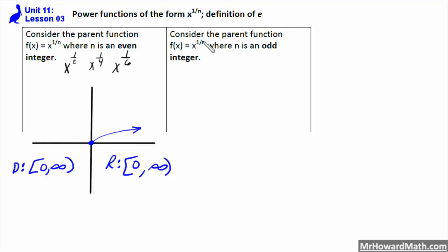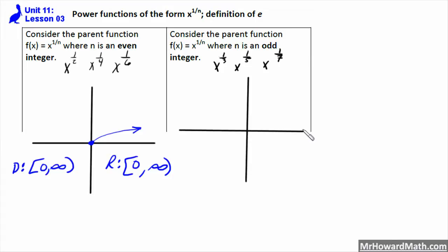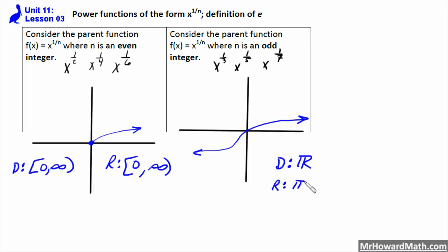Now consider the parent function f of x equals x to the 1 over n where n is odd — for example, x to the 1 third, x to the 1 fifth, x to the 1 seventh. They all have the same basic shape as the cubed root function. Raising to the 1 third power is the same thing as taking the cubed root. They all have this flattened S shape. The domain will be all real numbers, and the range is also all real numbers for any odd denominator.